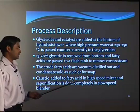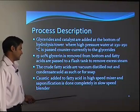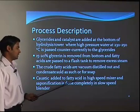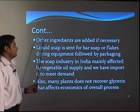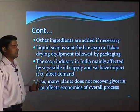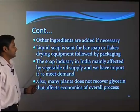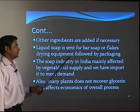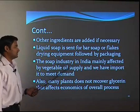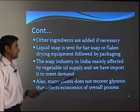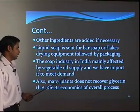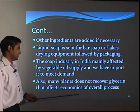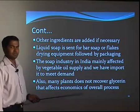The caustic is added to fatty acids in a high speed mixer and saponification is done completely in a slow speed blender. Other ingredients are added if necessary, then the liquid soap is sent for bar soap or flake drying equipment followed by packaging. The soap industry in India is mainly affected by vegetable oil supply and we have to import it to meet demands. Also, many plants do not recover glycerin, which affects the economics of the overall process.